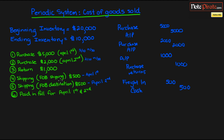Make sure you look at the type of FOB it is, because the second one, which is FOB Destination for the April 2nd entry — remember that the seller of the goods is the one that wants to get it to the destination. So we're not the seller, we're the buyer, so there's going to be no entry for that.